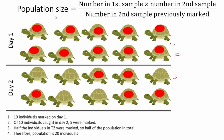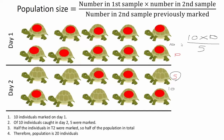Please refer to the equation sheet — don't think you need to memorise these equations, you don't. So: population size equals the number in the first sample times the number in the second sample, which was 10 times 10, divided by the number in the second sample that were previously marked. For me that was 5, because 5 of them were previously marked and were found again. So we divide by 5.